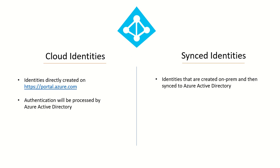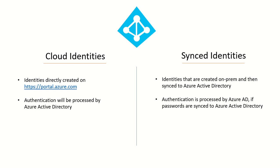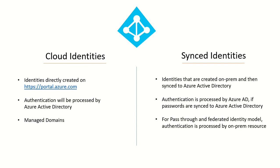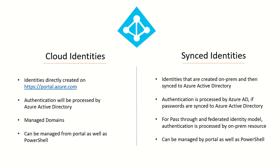Synced identities are those identities which are synced from on-premises to Azure Active Directory. For cloud identities, authentication is always processed by Azure Active Directory. For synced identities using password sync, authentication is also done by Azure Active Directory. Cloud identities require managed domains — you cannot have a federated domain and create an account in Azure Active Directory. For synced identities you also have a federated identity model, where you must have an IDP on-premises that does the first step of authentication and then a token is given to Azure Active Directory. In pass-through authentication, the first validation of credentials is done on-premises, which is why those agents are installed.